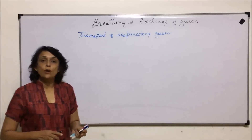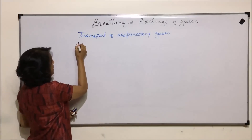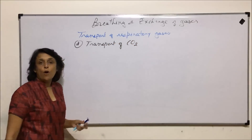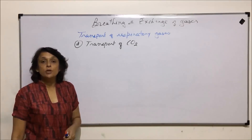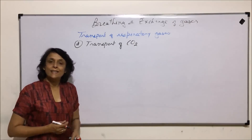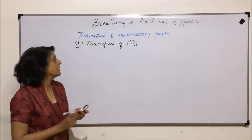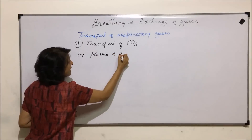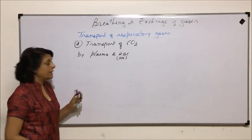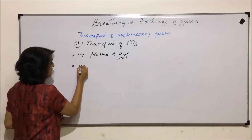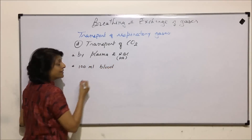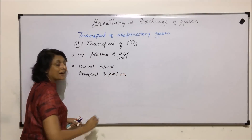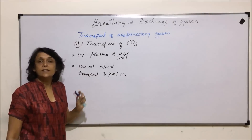We will now discuss the transport of another respiratory gas, carbon dioxide. Carbon dioxide is produced at the tissue level and then it is transported so that it can be thrown out during exhalation. It is transported by plasma as well as RBCs, with hemoglobin. One deciliter of blood, that is 100 milliliters of blood, transports 3.7 milliliters of carbon dioxide, and this carbon dioxide gets transported in three forms.